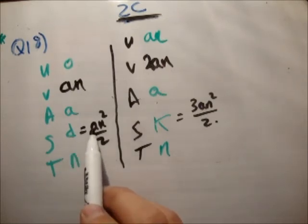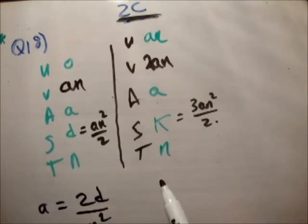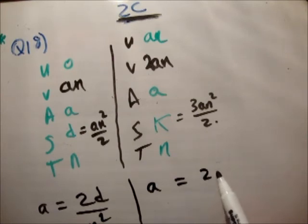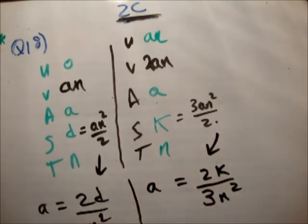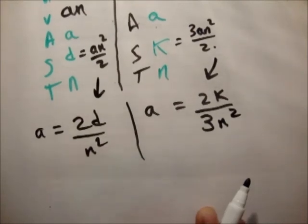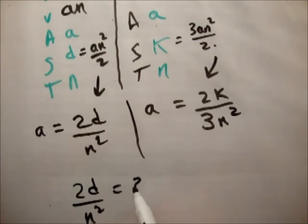So, first of all, get a in terms of everything else. So, we'll say a is equal to 2d over n squared. And we know that a over here is equal to 2k over 3n squared. Like that. So, a and a. Sorry, you couldn't see that. Excuse me. So, we go 2d over n squared is equal to 2k over 3n squared.